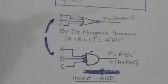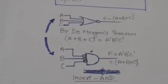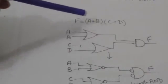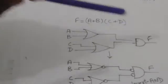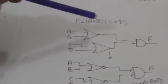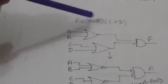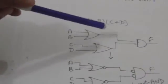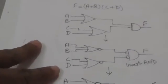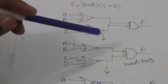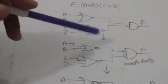Now we have to see how we can implement a function which is expressed in product of sums form by NOR gates. Look at this function — it can be implemented by OR and AND gates. Here I have implemented this function using OR and AND gates. We need an OR gate for each sum term, and then the output of all OR gates is connected to the input of a single AND gate.